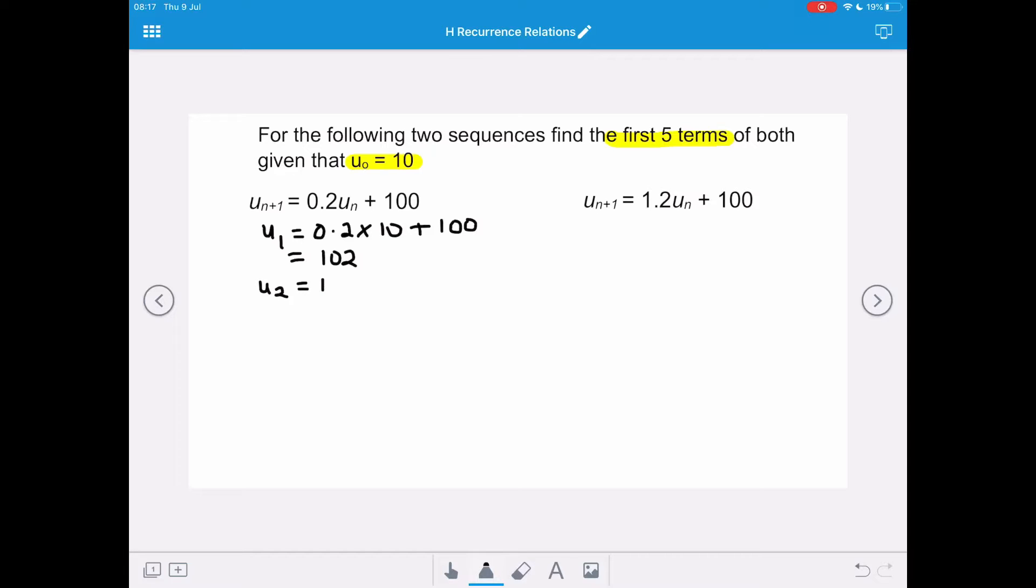u₂, our second term, is going to be 120.4. u₃ is going to be 124.08, u₄ is going to be 124.816, and u₅ is going to be 124.9632.